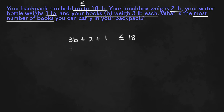Now we can combine like terms. So we get 3B plus 2 plus 1, or 3, is less than or equal to 18.